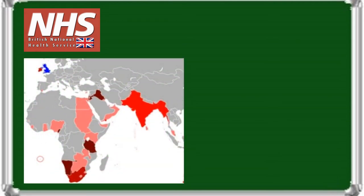The war left the UK severely weakened and financially dependent. In the immediate post-war years, the Labour government initiated a radical program of reforms, which had a significant effect on British society in the following decades. Major industries and public utilities were nationalized, a welfare state was established, and a comprehensive publicly funded healthcare system, the National Health Service, was created. The rise of nationalism in the colonies coincided with Britain's diminished economic position, so that a policy of decolonization was unavoidable. Independence was granted to India and Pakistan in 1947. Over the next three decades, most colonies of the British Empire gained their independence, and many became members of the Commonwealth of Nations.